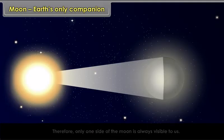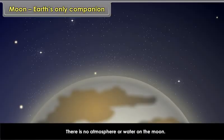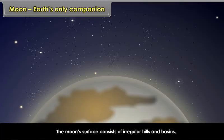There is no atmosphere or water on the Moon. The Moon's surface consists of irregular hills and basins. There is no soil either.